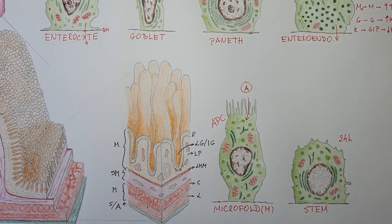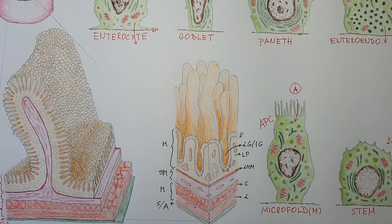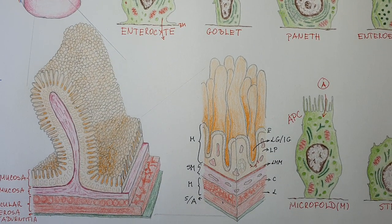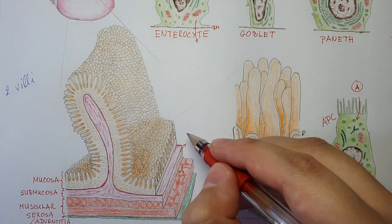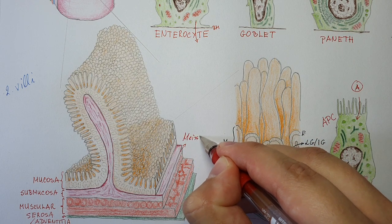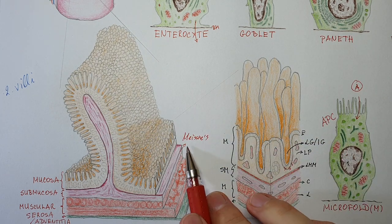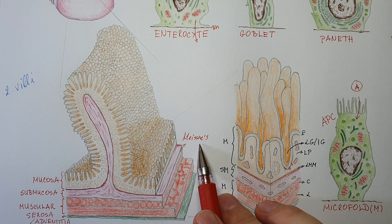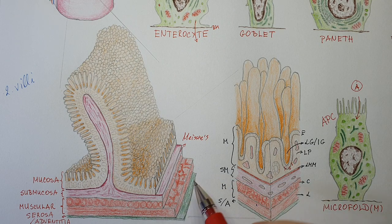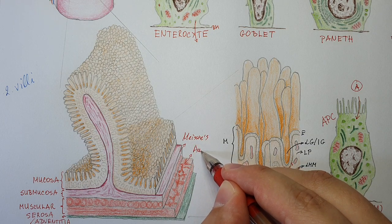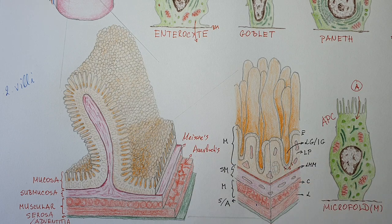In addition to this general structure, there are two important nervous plexuses in the gut. In the submucosa we have Meissner's plexus, also called the submucosal plexus, which regulates the secretion of glands into the lumen. Between the two muscular layers we have Auerbach's plexus, which regulates peristaltic movement.